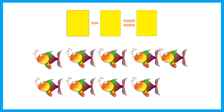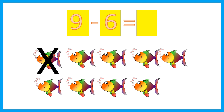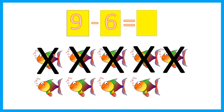How many fish are there? 1, 2, 3, 4, 5, 6, 7, 8, 9. Nine fish. Minus six. So we need to cross out six. 1, 2, 3, 4, 5, 6. How many left? Let's count. 1, 2, 3. So there are three fish left.